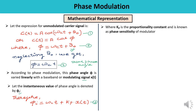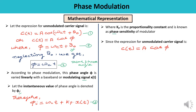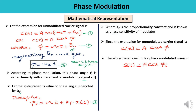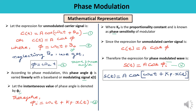kp is the proportionality constant known as the phase sensitivity of the modulator. The expression for the phase modulated signal s(t) = A cos(phi_i), where phi_i is substituted from equation 3, giving: s(t) = A cos(omega_c * t + kp * x(t)). This is the required mathematical expression for the phase modulated wave.